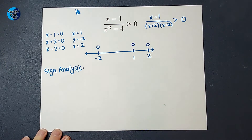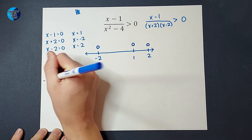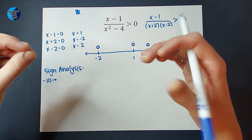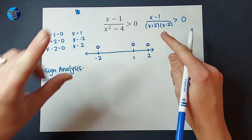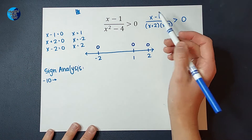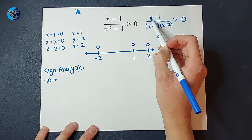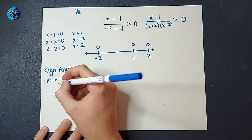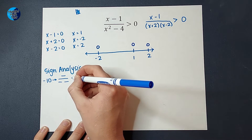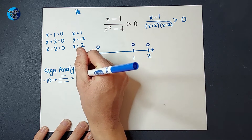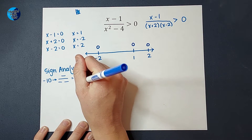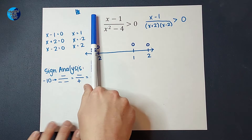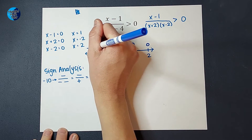I'm picking a number to the left of negative two — let's just pick negative ten. I'm going to plug in negative ten for x, and I don't really care what my numerical answer is; all I care about is if it's positive or negative. So on top I get negative ten minus one, which is negative. On bottom, negative ten plus two is negative, and negative ten minus two is also negative. Negative times negative gives a positive on the bottom. Then negative divided by positive is negative. So this region to the left of negative two is negative.